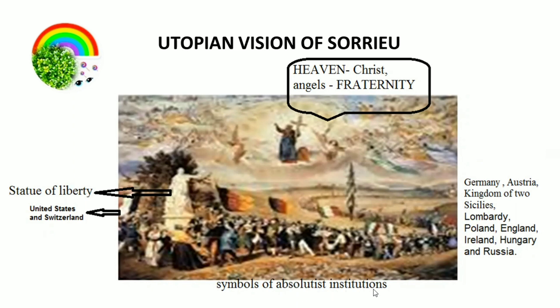Symbols of absolutist institutions — that means the monarchy — they were all shattered and the pieces are just shown in print, and from the heaven, Christ and angels are gazing upon the scene. This was a utopian vision. That means nation states did not exist, but still Soria had imagined and drawn this diagram.